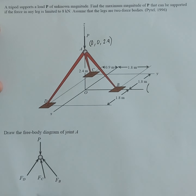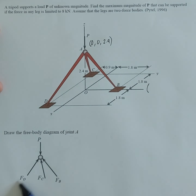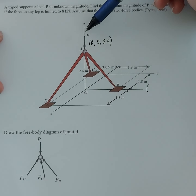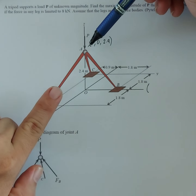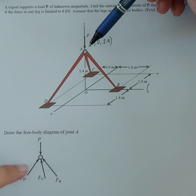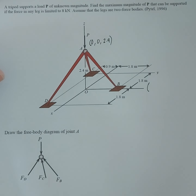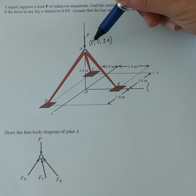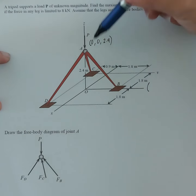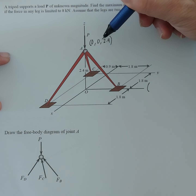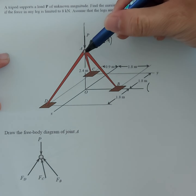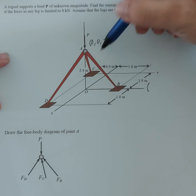This would be our free body diagram. We have P, and FD directed towards this point — it is in compression. If P acts downwards, then the reaction of each leg of the tripod would push upward. The coordinates of point A are on the Z-axis with no X or Y components, and a Z-coordinate of 2.4 meters.